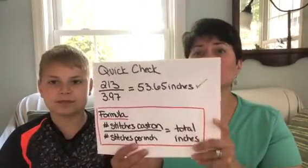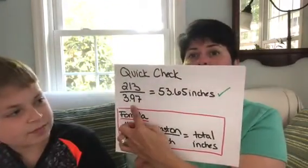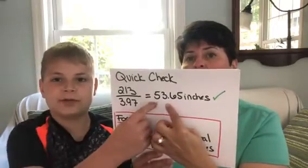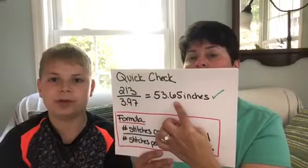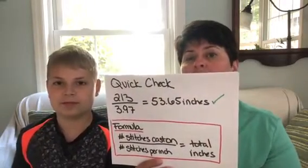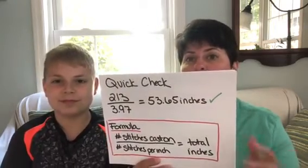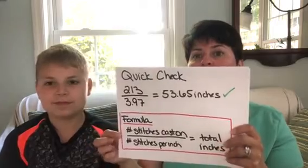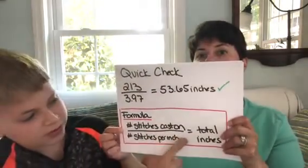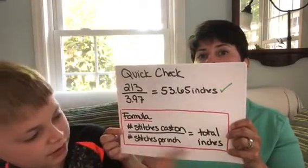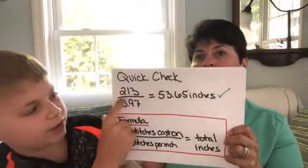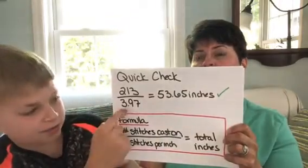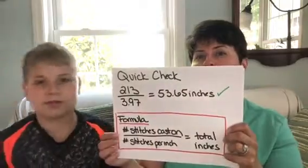To double-check, we took 213 and divided by 3.97 — our stitches per inch — and got 53.65 inches, which is really close to the 54 inches we were aiming for. The verification formula is: number of stitches cast on divided by stitches per inch gives your total inches. So 213 stitches divided by 3.97 gives us about 54 inches.